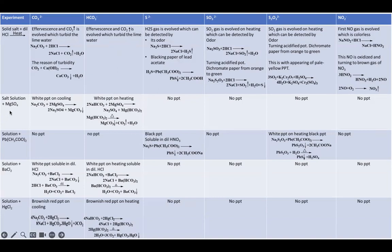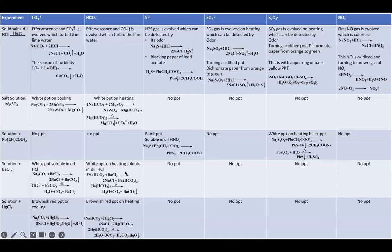If there is strong effervescence, it means carbonate or bicarbonate. To differentiate between both: take the salt solution — the first experiment is in solid, then all next experiments are in solution. Add magnesium sulfate: if it gives a white precipitate immediately on cooling, it is carbonate. However, if it gives a white precipitate after heating, it is bicarbonate. The same applies with barium chloride — precipitate in cold means carbonate, and after heating means bicarbonate. With mercury chloride, it gives a brownish-red precipitate on cooling for carbonate, and after heating for bicarbonate.